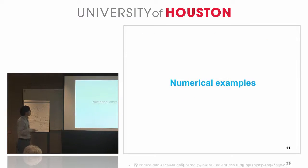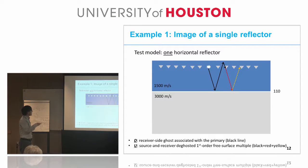Next, I will focus on providing two numerical examples. This is the first example with the single reflector case. In the 1D acoustic case, if we interpret D as the receiver type ghost associated with the primary, represented by the black line, and interpret U as the source and receiver type ghosts plus the first order surface multiple, with this interpretation we can use the multiple to enhance the image of this reflector.